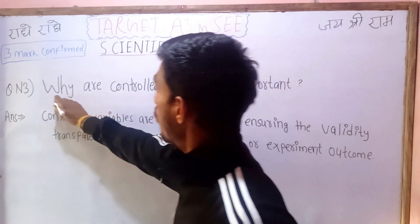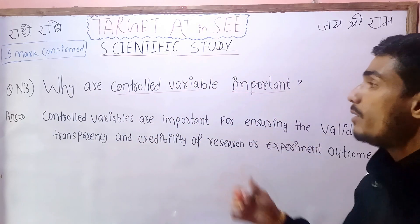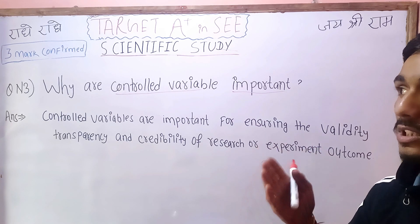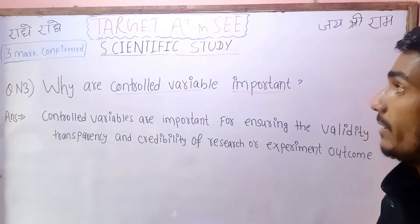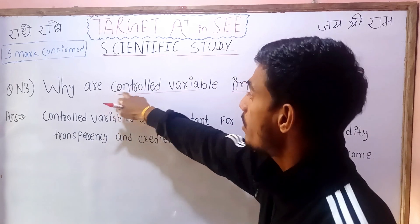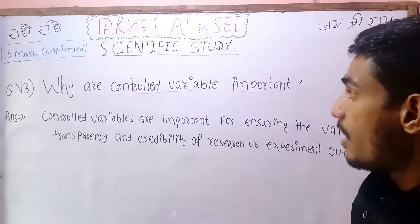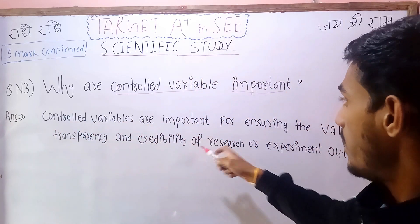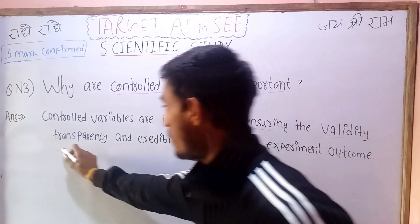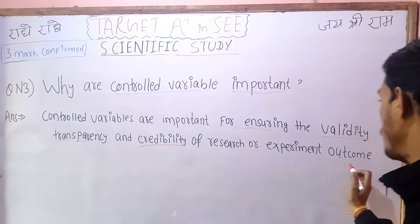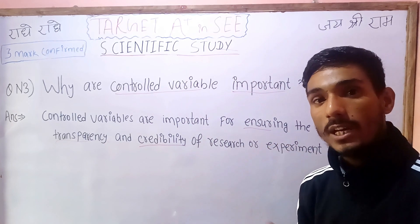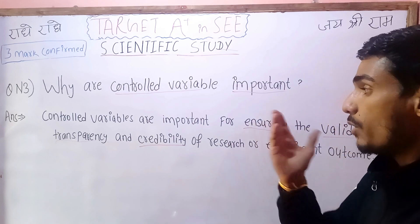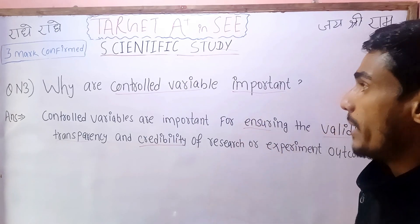Question number 3: why are control variables important? Control variables are important for ensuring the validity, transparency, and credibility of research or experiment outcomes. Some research and experiment outcomes and results are very valid, very transparent, and have very high credibility. That is why the control variable is important.